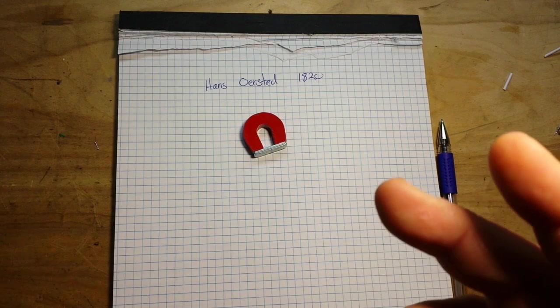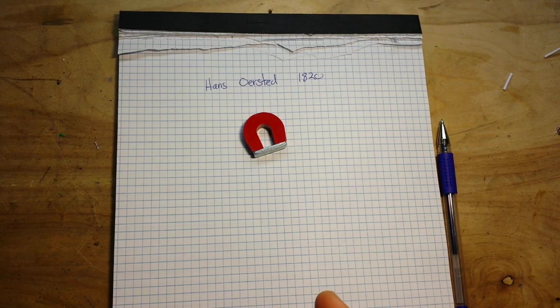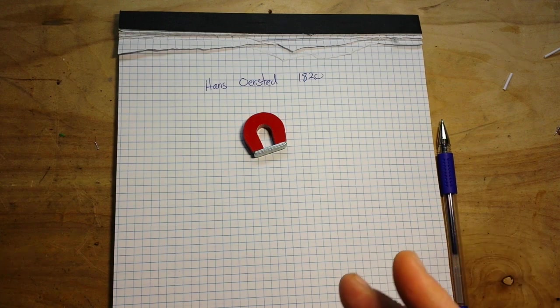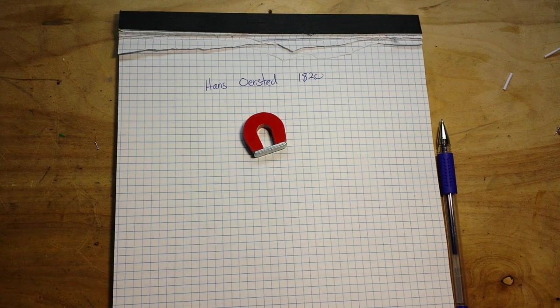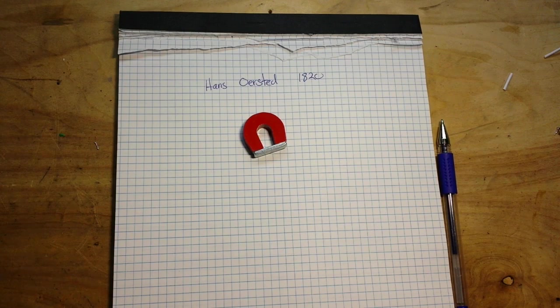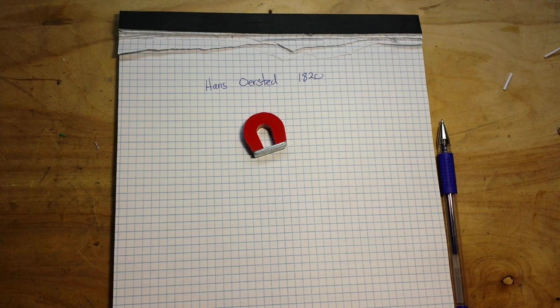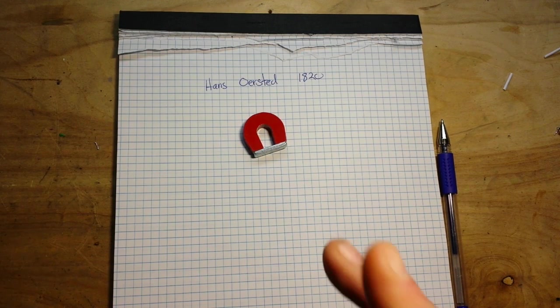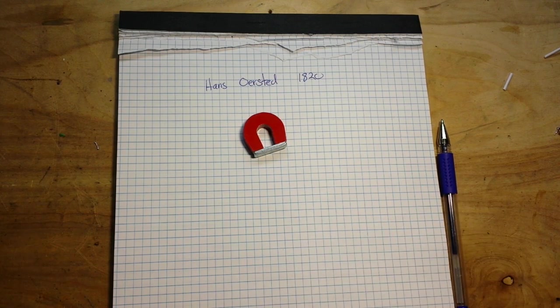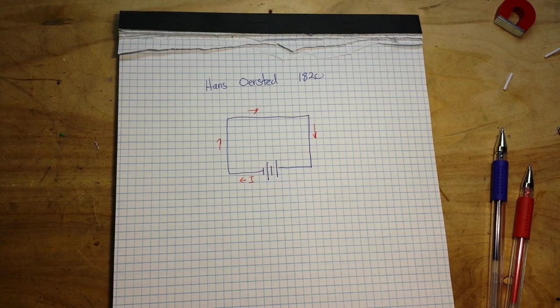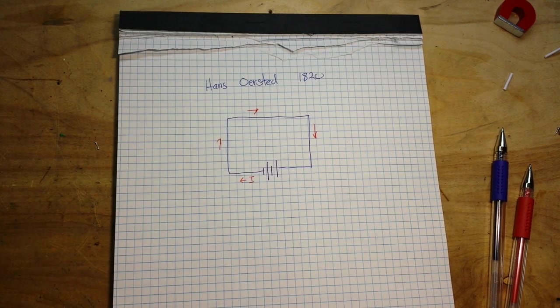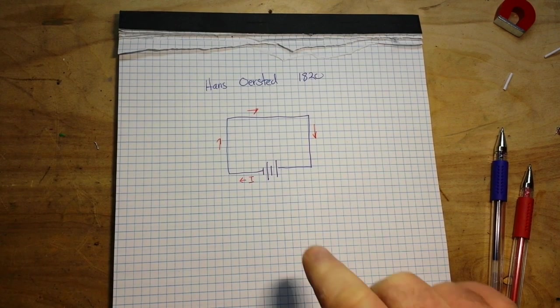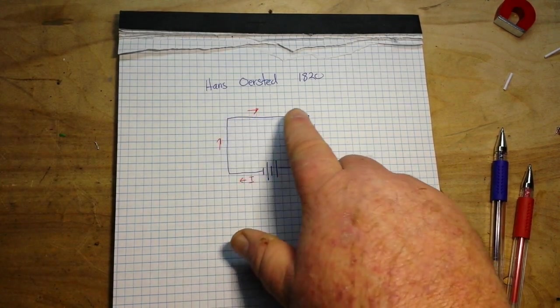Now moving on from there, detailed experiments showed that the magnetic field produced by an electric current is always oriented perpendicular to the direction of flow. And there is a simple method for explaining this called the left-hand rule. Let me draw something here and we'll talk about it. So here's a simple way to look at the left-hand rule.